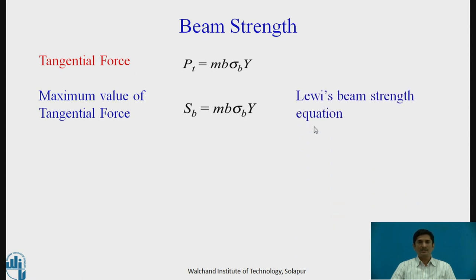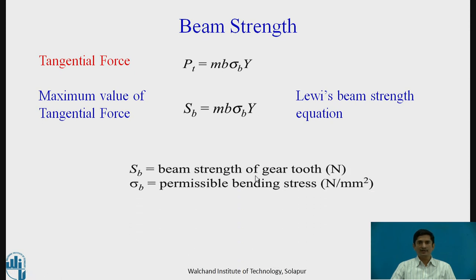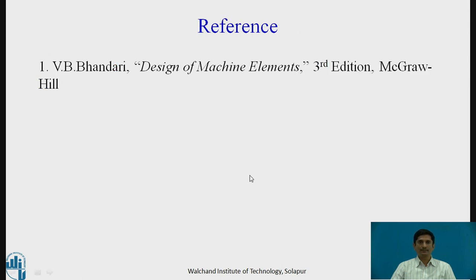This is also called Levy's beam strength equation. The terms in this equation are: Sb is the beam strength (maximum value of tangential force Pt); M is the module expressed in millimeters; B is the face width; sigma B is the permissible bending stress, which can be obtained as SUT divided by 3; and y is the Levy's form factor. Reference for this equation is the book Design of Machine Elements.